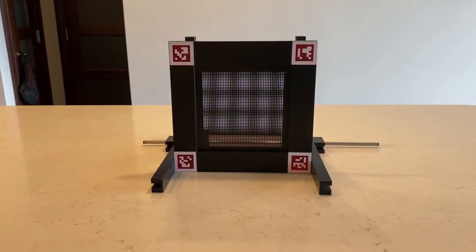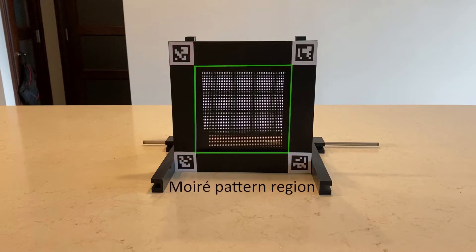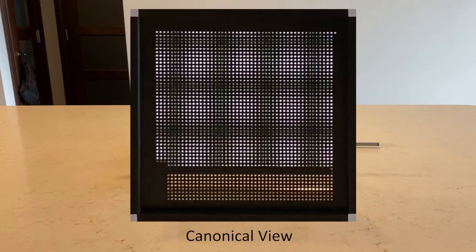The four visual markers are used for determining the region of the Moray pattern. Once the Moray pattern is located, we apply a perspective transformation to convert the Moray pattern to a canonical view.